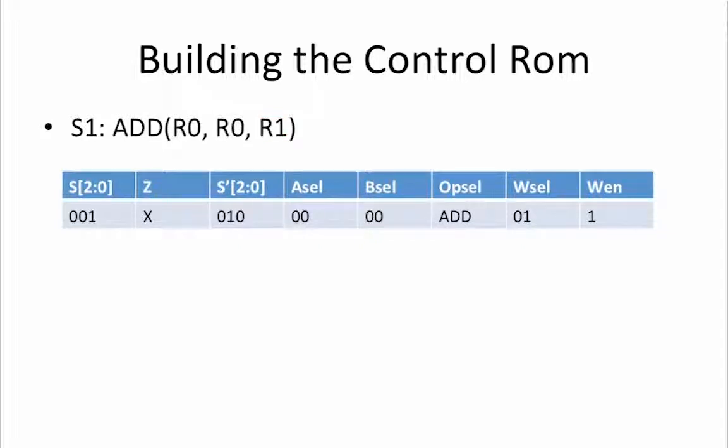Now, let's quickly run through the rest of our instructions. Our current state is state S1 or 001. Once again, Z is a don't care. Since the instruction that will be executed next is the one in S2, our next state is 010. Our Asel equals 00 and Bsel equals 00. OPsel equals add and Wsel equals 01 and WN equals 1.